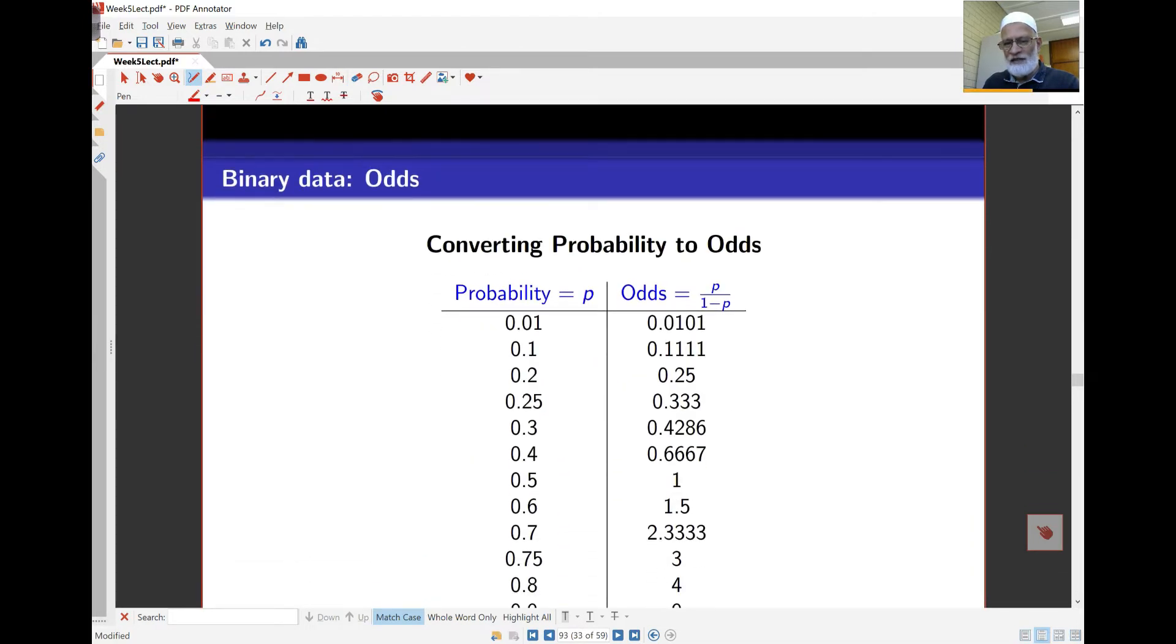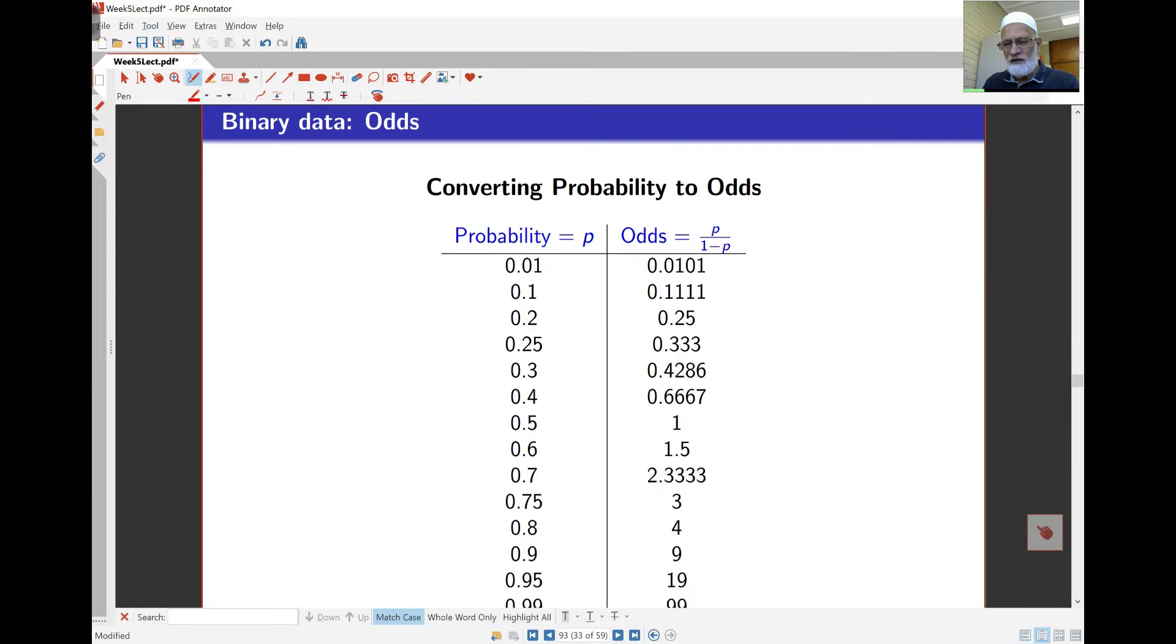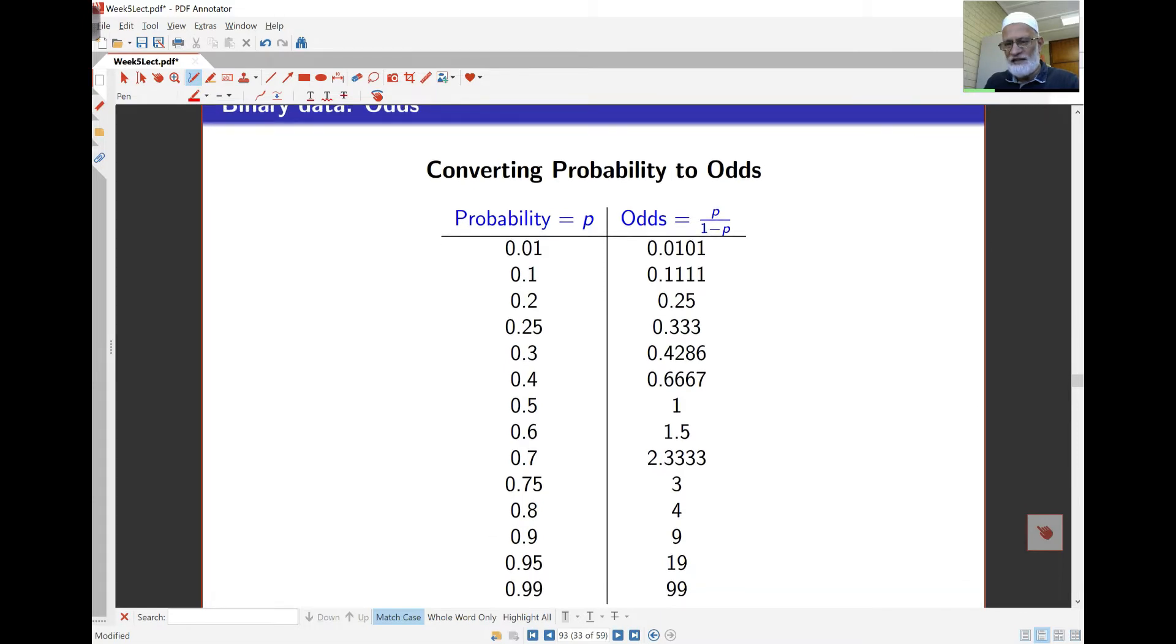Just a table here of conversion to see what's going on. You can see that if probability of success is low, then the odds ratio is also quite small. When we get to a half, when we have an even chance, the probability of failure and success are equal, then the odds is actually equal to 1, and that makes sense.